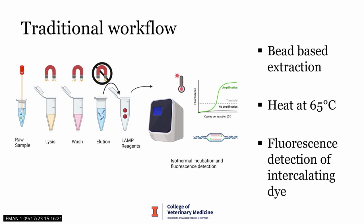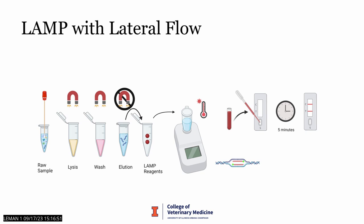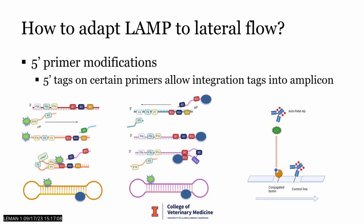The traditional workflow used a magnetic bead-based extraction method, avoiding large lab equipment like centrifuges, followed by lysis and wash buffers. The eluted RNA is added to LAMP reagents, then incubated in a qPCR machine to measure fluorescence amplification using an intercalating dye every 20 seconds. To eliminate the qPCR instrument, we adapted the test with a lateral flow readout — incubate with just a heat block and add reagents to a test strip kit at the end, eliminating the need for expensive detection equipment.